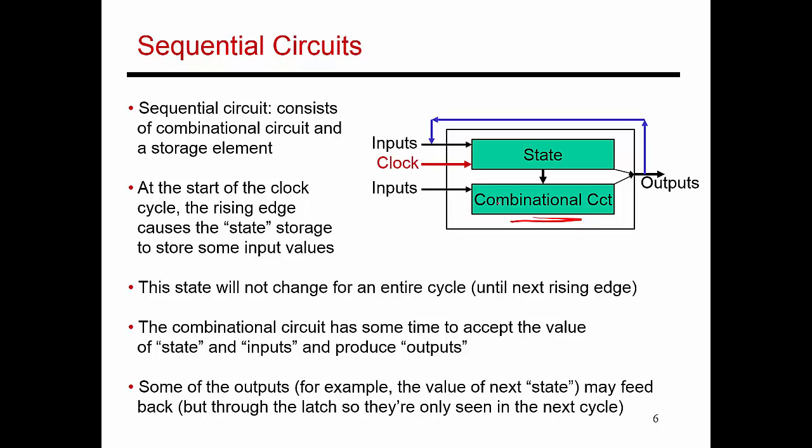In addition to that now, I have the state element which can remember what has happened in previous cycles. So based on whatever happened in the past, it moves to a certain state and it remembers that. And that feeds as one of the inputs to my combinational circuit. And so essentially whatever output I produce is not just a function of the inputs, it's also a function of the state, that is whatever happened in previous cycles.